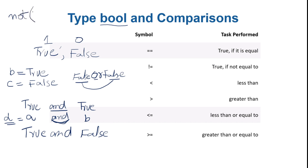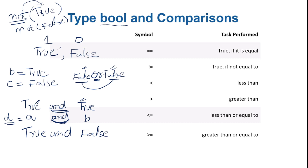There is another operator called 'not'. 'not True' returns False, and 'not False' returns True. 'not' is a unary operator — it takes just one variable and operates on it. 'and' and 'or' are binary operators — they take two variables to operate on. Remember: 'and' returns True only if both variables are True, 'or' returns False only if both are False, and 'not' just flips the state.